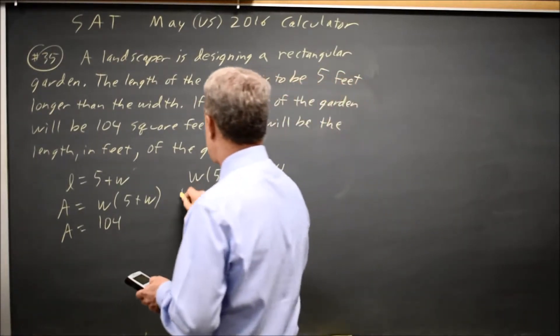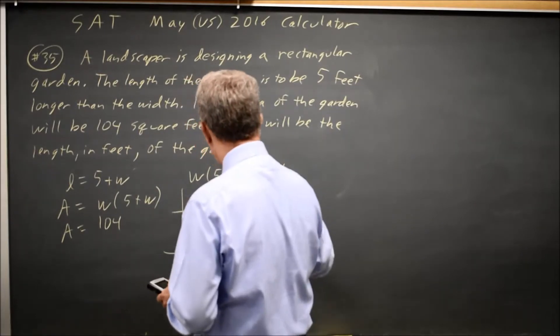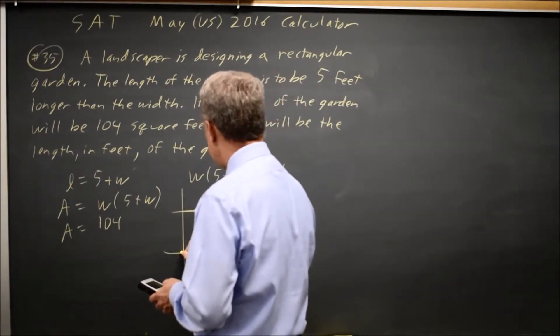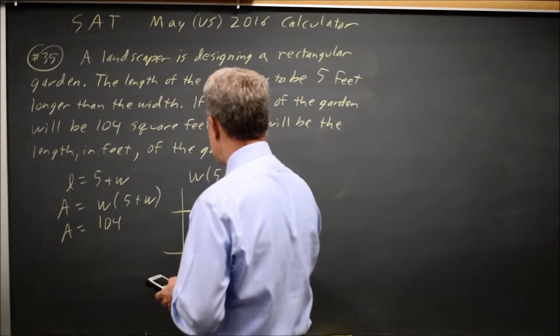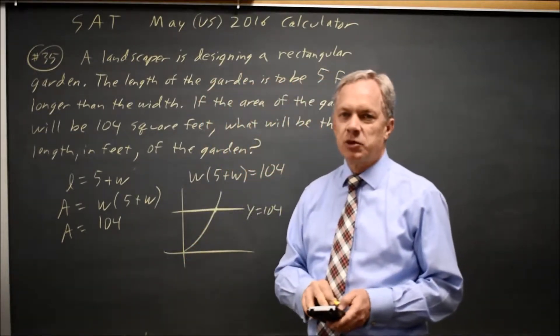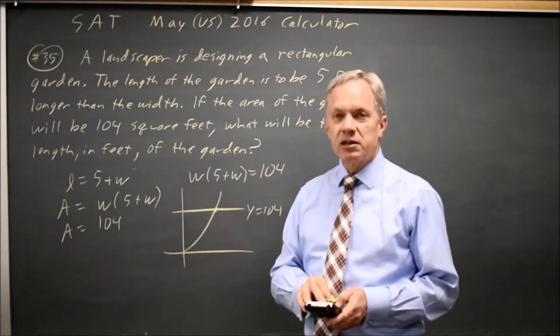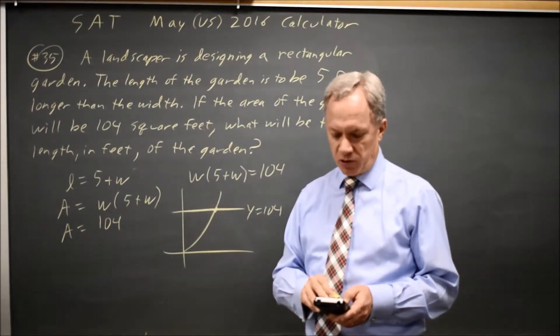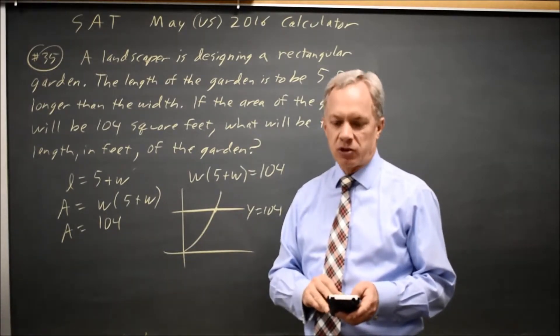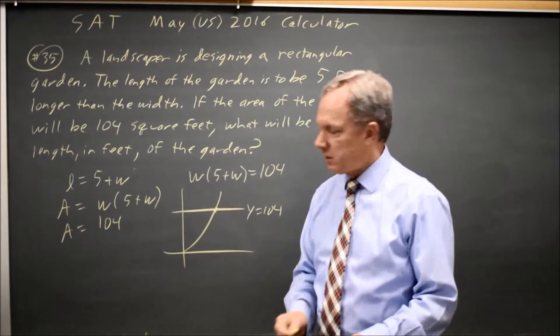And then my graph looks like this. I have Y equals 104, and then I have my W times 5 plus W that looks something like this. And when I find the intersection, which you should know how to do on a graphing calculator, second trace on my TI-83 or 84, choice 5 is intersect.